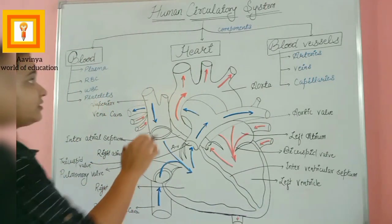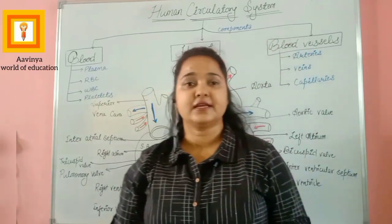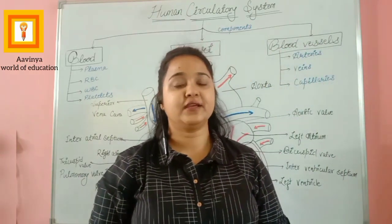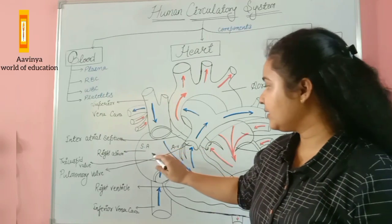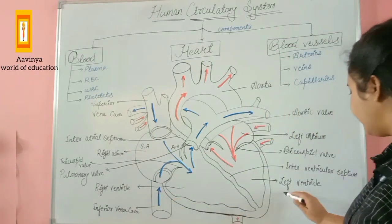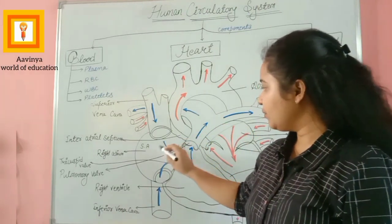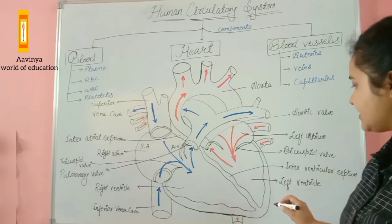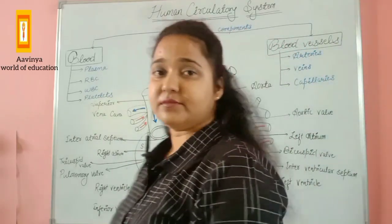The heart is made up of cardiac muscle. It has four chambers and a covering known as the pericardium. It is a mesodermal-originated organ. The four chambers are: right atrium, left atrium, right ventricle, and left ventricle. There is a septum present between the two atria known as the inter-atrial septum, and an interventricular septum present between the left ventricle and right ventricle.